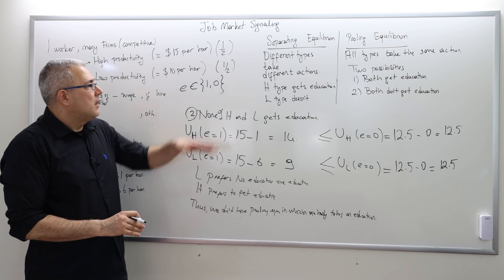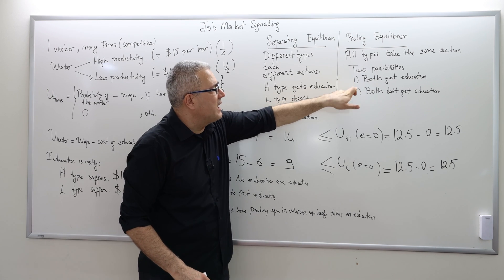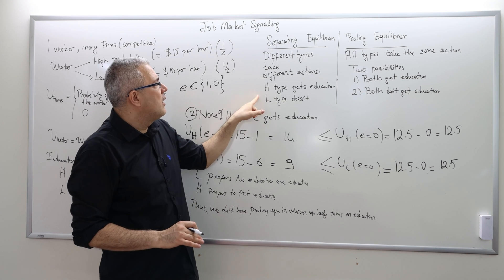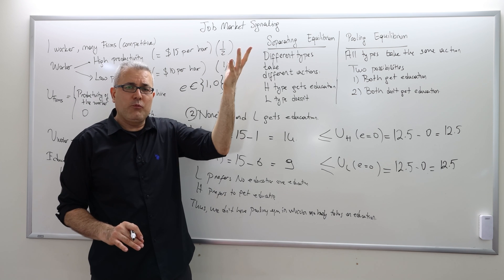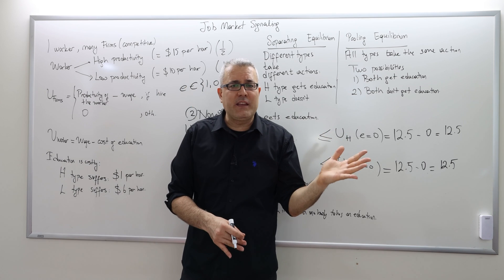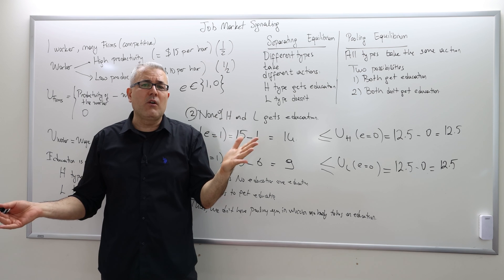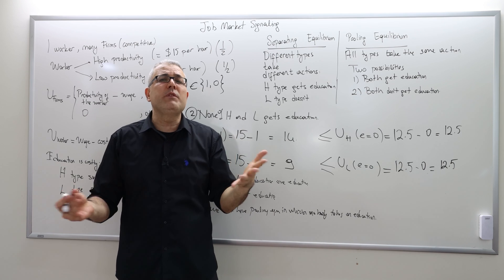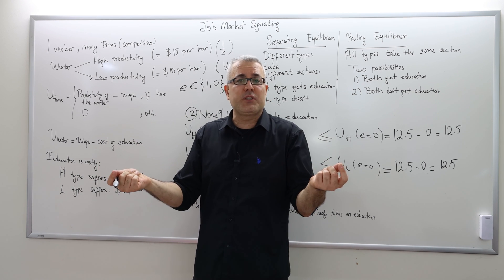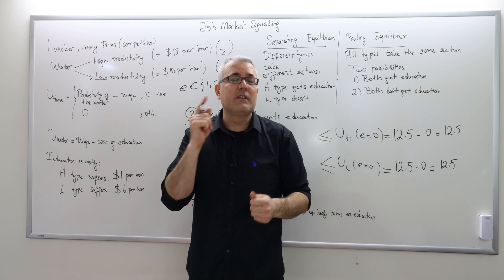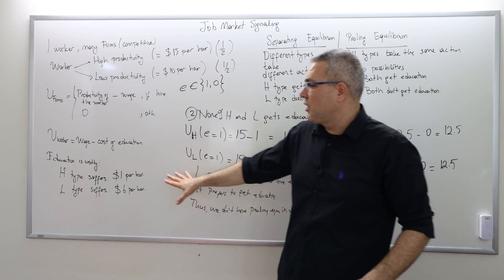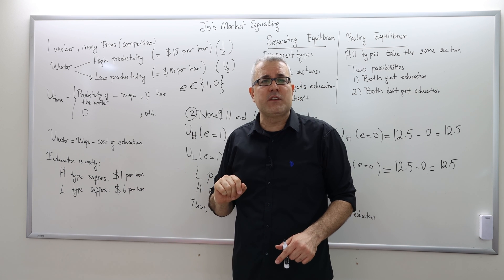In conclusion, after analyzing both cases, we learn there is no pooling equilibrium in this model. In the previous video, we already showed there is a separating equilibrium where the high type gets the diploma and the low type does not. So in this game there is only one equilibrium — the separating equilibrium — where the high type gets education and the low type does not. The types are revealed perfectly, the efficient outcome is realized thanks to education, and the agents use education to signal their productivity successfully. In the next video, I'll make another example where I change the cost of education slightly, and we may get completely different results.